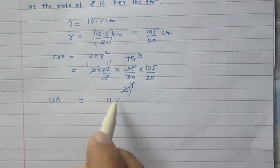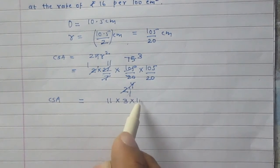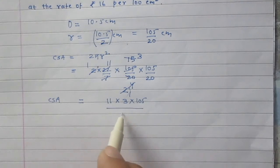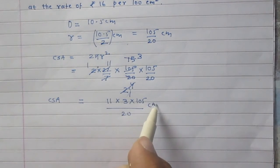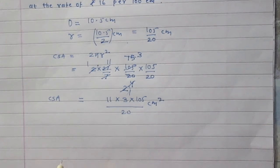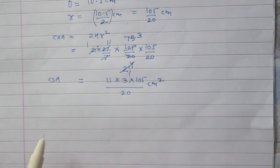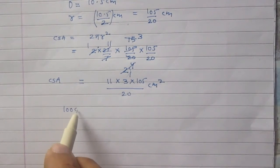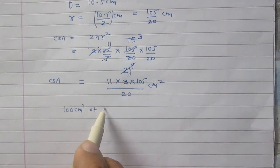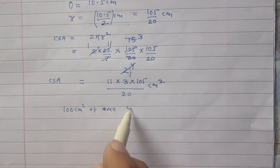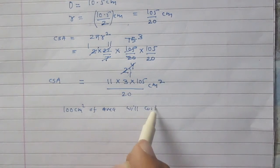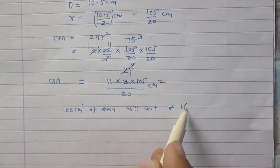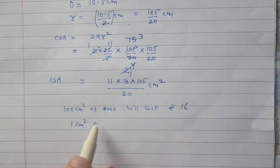Now we are given that 100 centimeter square of area will cost rupees 16. So 1 centimeter square of area will cost rupees 16/100.